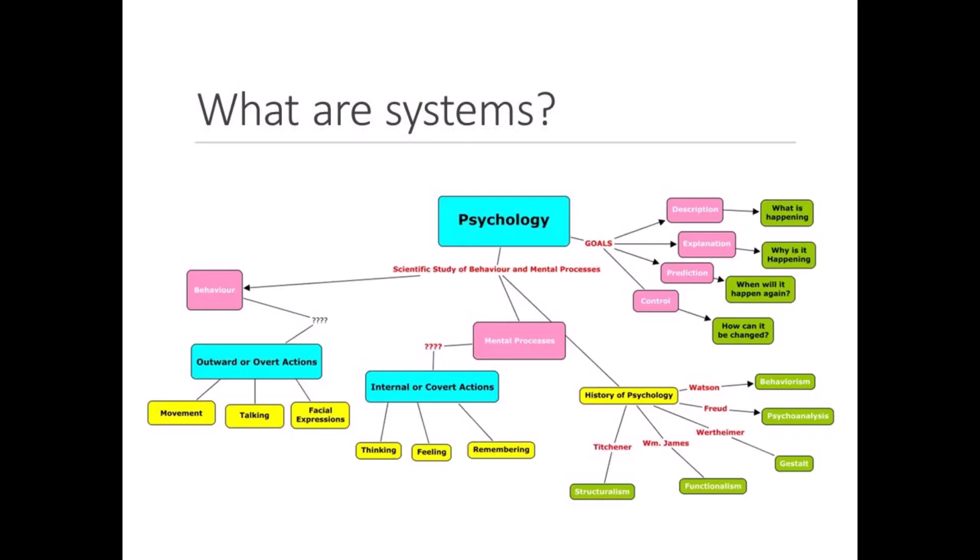This figure depicts psychology as a system. As you can see here, the field's history is just one part of the system. It also includes the goals of psychology — to describe, explain, predict, and control — as well as the concepts that fit within it: human behavior and mental processes. We could add the subfields or subsystems of psychology to this illustration.